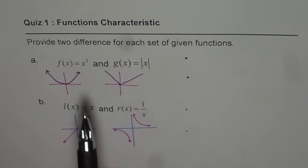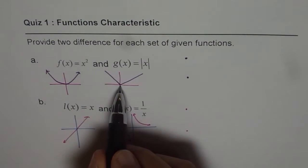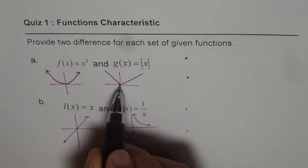Well, here is my solution. For the first one, the differences could be at origin. We have a sharp corner.